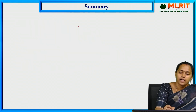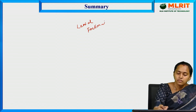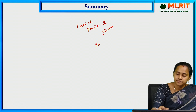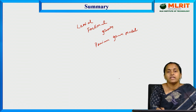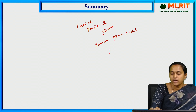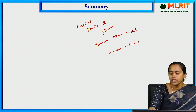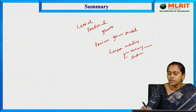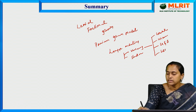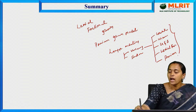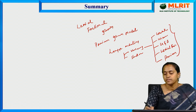In summary, we discussed lexical functional grammar and the Paninian grammar based model. Overall, in language modeling, there are two types: grammar-based modeling and statistical language modeling. Under grammar-based modeling, we covered generative grammar, hierarchical grammar, government and binding, lexical functional grammar, and Paninian grammar. Thank you.